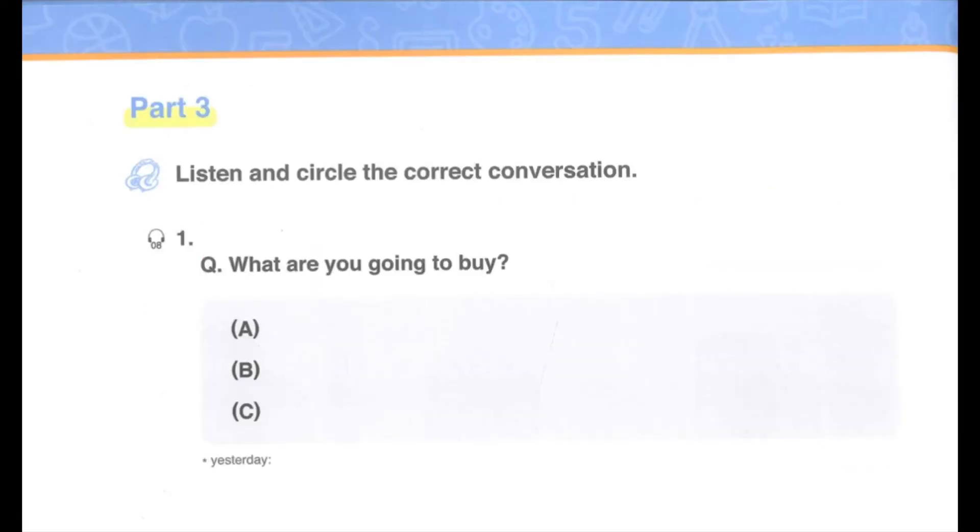Part 3: Listen and circle the correct conversation. Number 1. A: What are you going to buy? I bought it yesterday. B: What are you going to buy? I need to buy some ice cream. C: What are you going to buy? You are going to buy some ham.